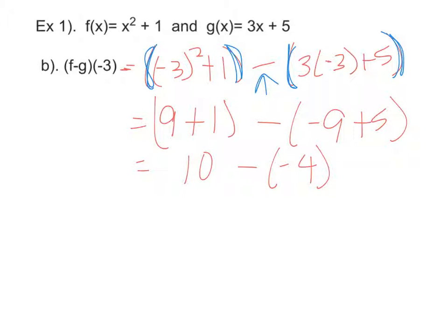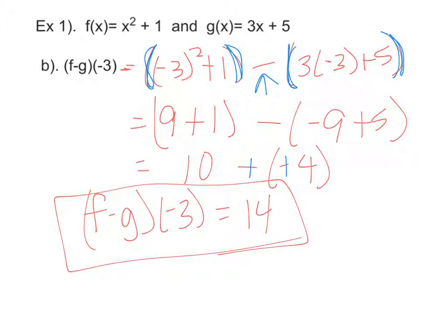So I have 10 minus a negative 4. Notice how that makes a difference, because at this point we're going to add the opposite. So whenever I have my problem, F minus G of negative 3 actually equals 14. Very cool.